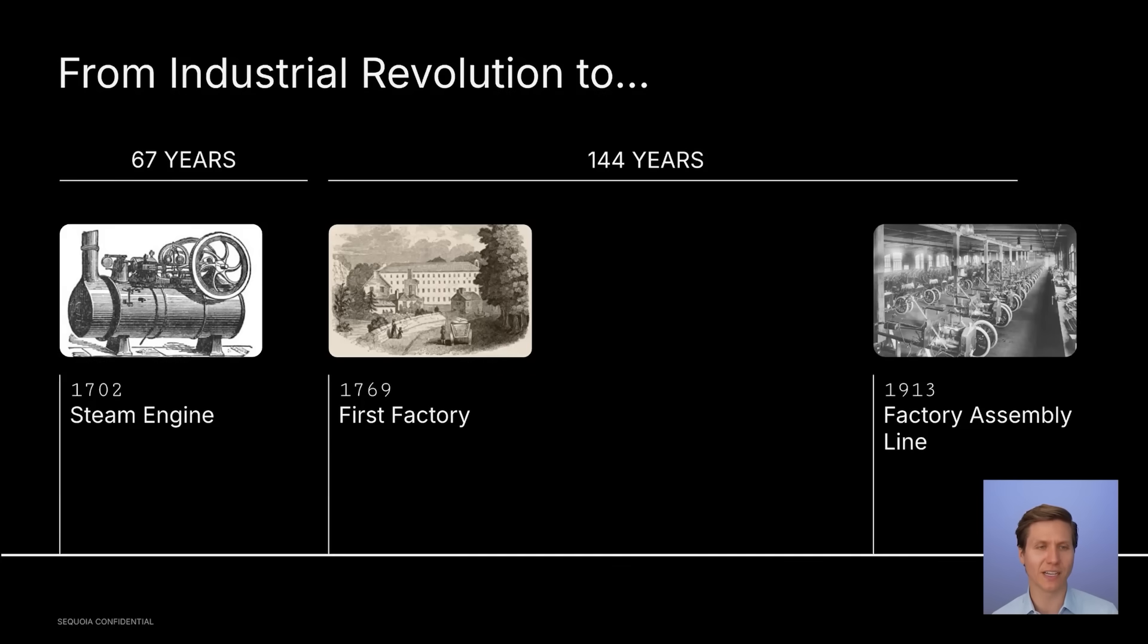What's curious about this slide is the time in between these points. 67 years from the first steam engine to the first factory, and that first factory didn't even use the steam engine, it was powered by water. Then 144 years between that first factory and the factory assembly line as we know it today. Question is, why did it take so long? In particular, what was going on in these 144 years?